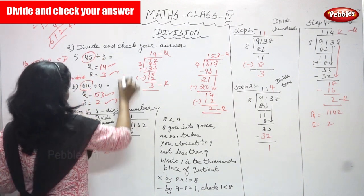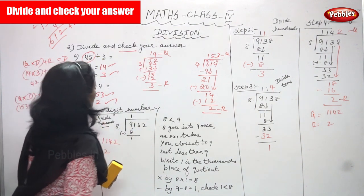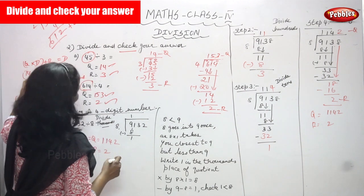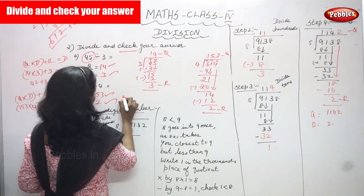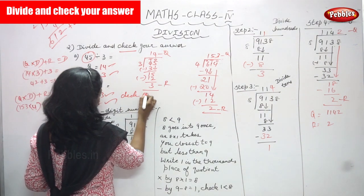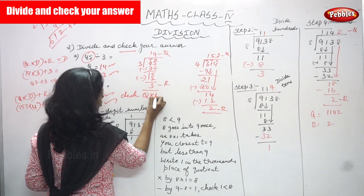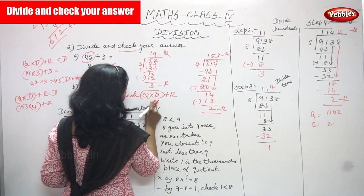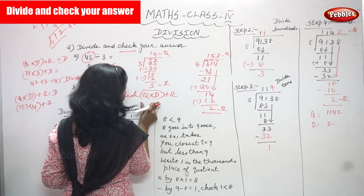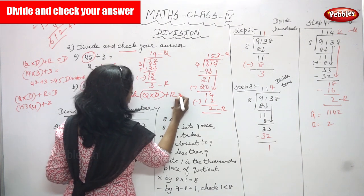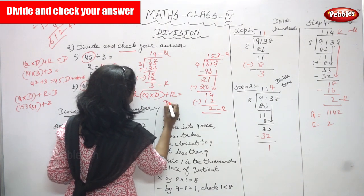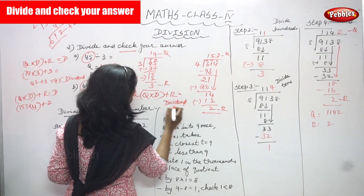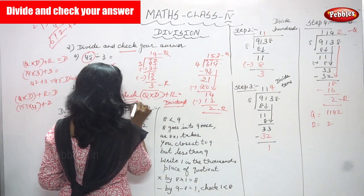This is the check method. The formula is: quotient into divisor plus remainder gives the dividend. D-I-V-I-D-E-N-D. This is the formula for the check method.